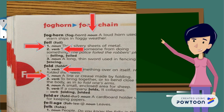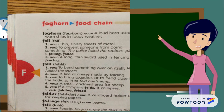A dictionary can also be used to find out the definition or meaning of a word. For example, foghorn is a loud horn used to warn ships in foggy weather.